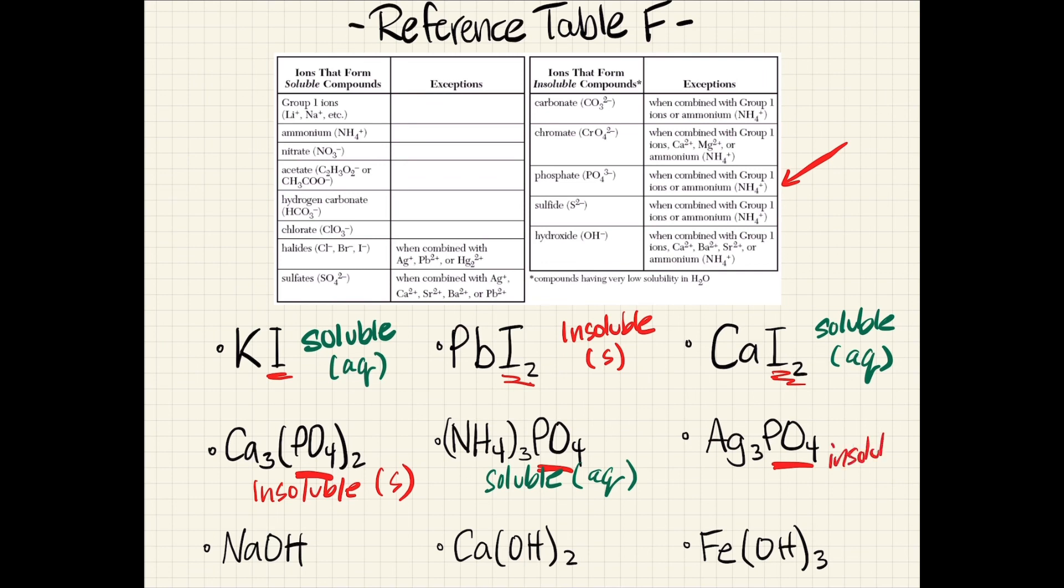And our last one is silver 1 phosphate. Silver is neither a group 1 ion nor is it the ammonium polyatomic, so it is insoluble.